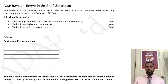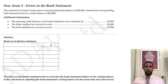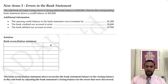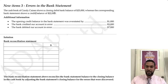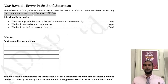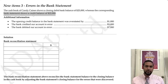Errors in the cash book were corrected in the updated cash book. Any errors we recognize in the bank statement, we will deal with in our bank reconciliation statement. The cash book of Candy Cane shows a closing debit balance of $25,000, whereas the bank statement shows a credit balance of $22,000. A credit balance in the bank statement is equivalent to a debit balance in the cash book. There's a difference of $3,000.